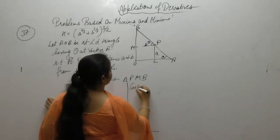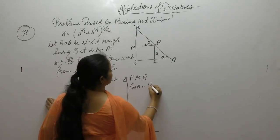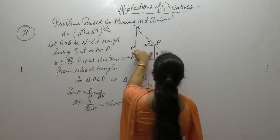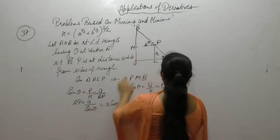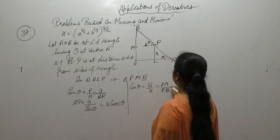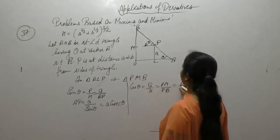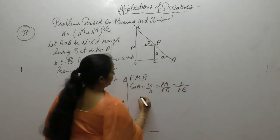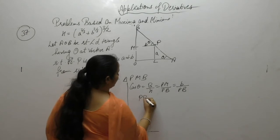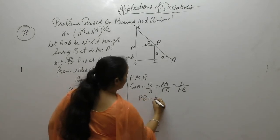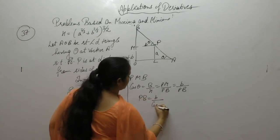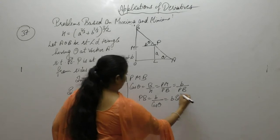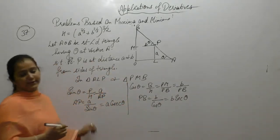Now cos of theta is base upon hypotenuse. So base is PM and hypotenuse is PB. PM has value B. So we get PB equals B upon cos theta, and 1 upon cos is sec theta.